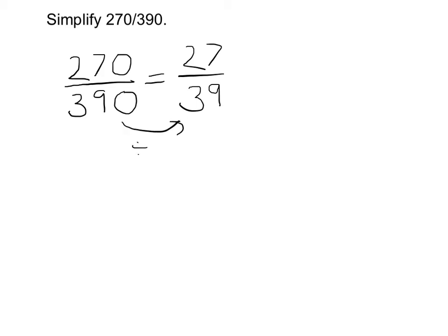I can continue doing this until the numbers get so small that they don't share any factors. In this case, I know that 27 and 39 are both multiples of 3, so therefore have a factor of 3.